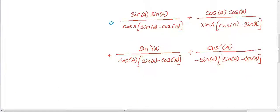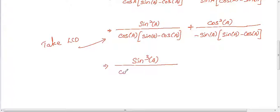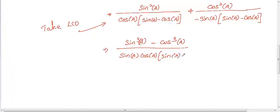Now we have the sin a minus cos a term in both denominators. Take LCD and simplify. We get sin cubed a minus cos cubed a divided by sin a cos a times sin a minus cos a.